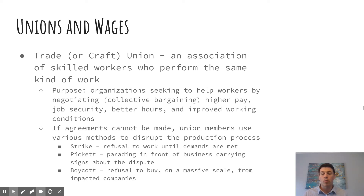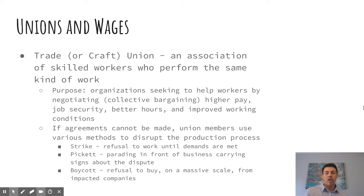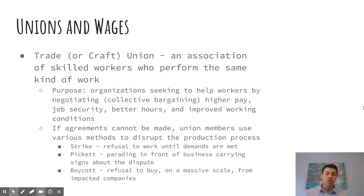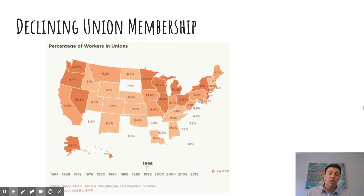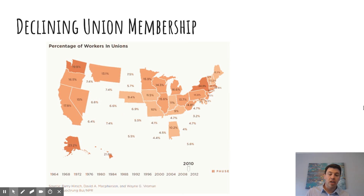Now let's move on to unions. A trade union or craft union is an association of skilled workers performing the same kind of work. Their goal as an organization is to help workers through collective bargaining to negotiate higher pay, job security, better hours, and improved working conditions. If agreements cannot be made, unions can use tactics like strikes, picketing, and boycotts to disrupt the production process. You can see on screen the declining union membership over the years — for example, Indiana went from about 40% union membership down to around 16% by 2012.